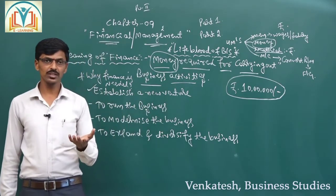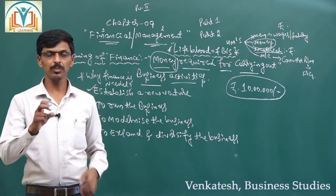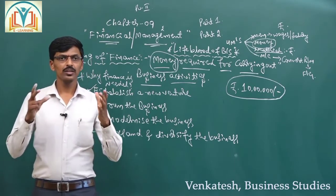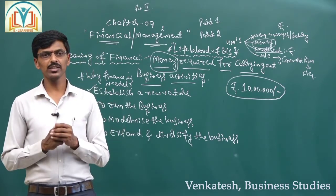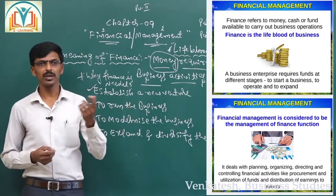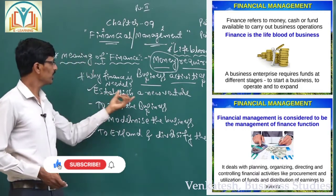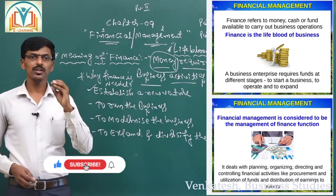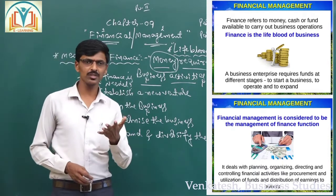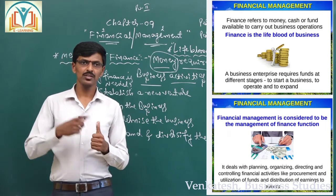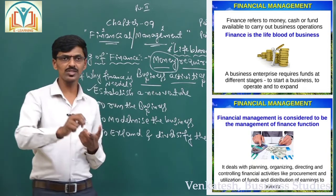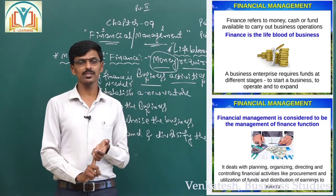The first reason: to establish a new venture. To construct a building we need to purchase land, to construct a building for conducting production activities and to make a physical layout of a company, we require money. After purchasing the land we need to construct the building, after constructing the building we need to install machines and purchase raw materials.